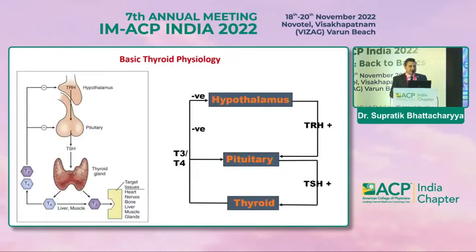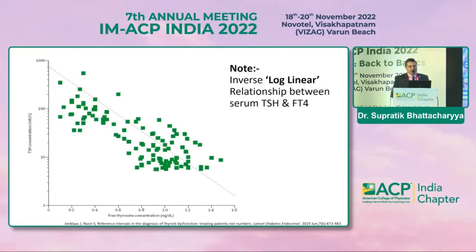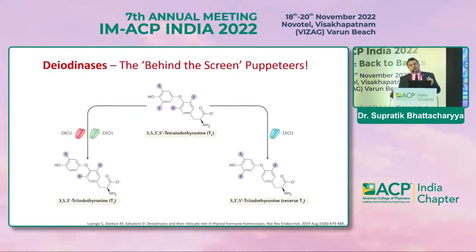Let's go back to the basics and look at the axis. We know that there's a negative feedback mechanism that works in normal physiology. In primary hypothyroidism, there is less free T4, and because of that, you have increased TSH and increased TRH. In primary hyperthyroidism, it's the other way around. Of course, there's a log-linear relationship between TSH and free T4. Deiodinases are very important — they are the behind-the-scenes puppeteers. Normally, what is driven is conversion of T4 to T3, and what is suppressed is conversion of T4 to reverse T3.